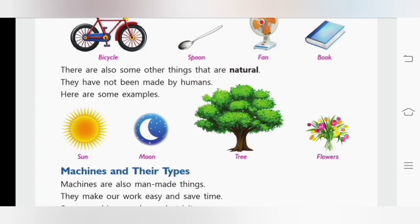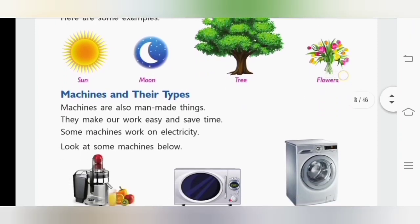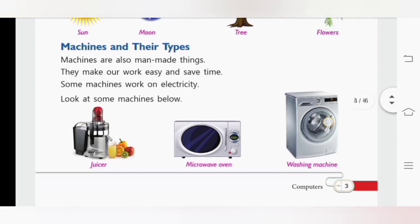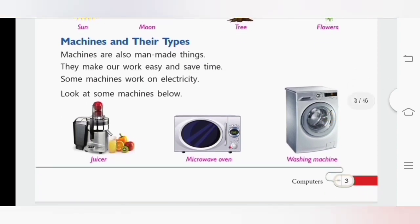Now our next topic is machines and their types. Now we will read out the lines first. Machines are also man-made things. They make our work easy and save time. Some machines work on electricity. Look at some machines below. Juicer, microwave oven, washing machine.